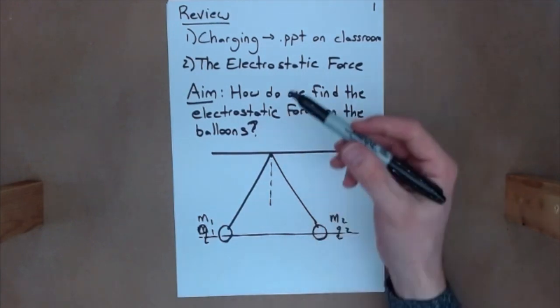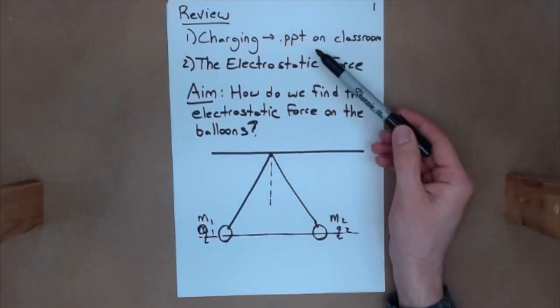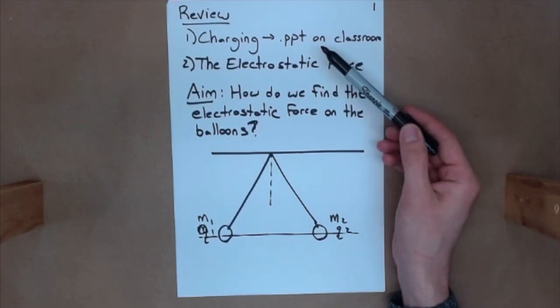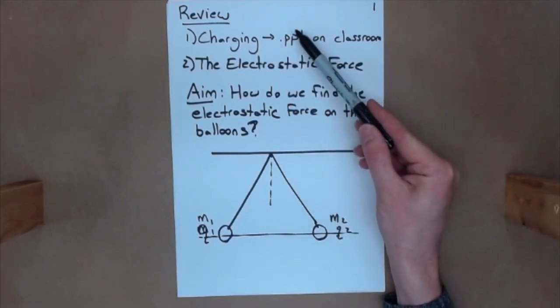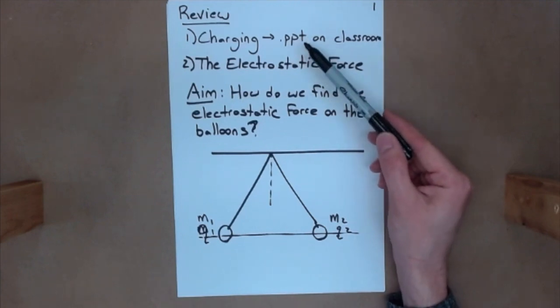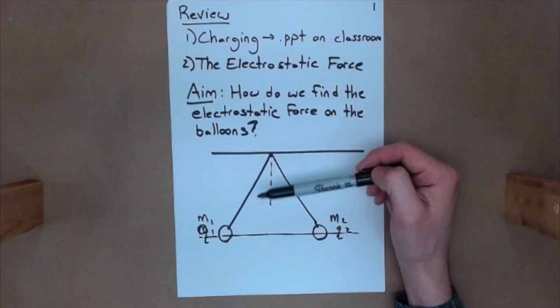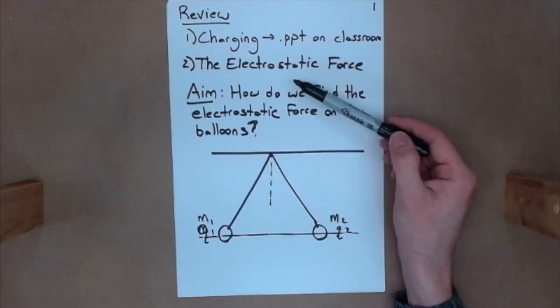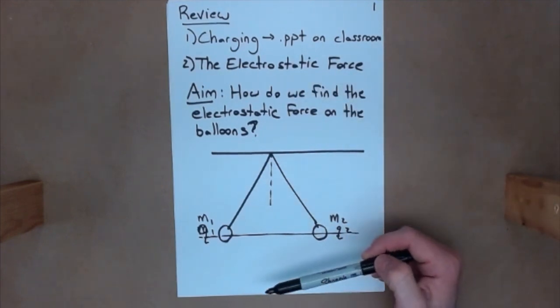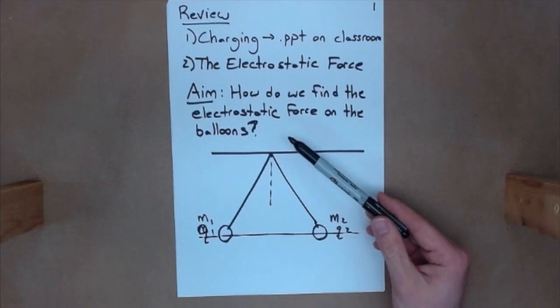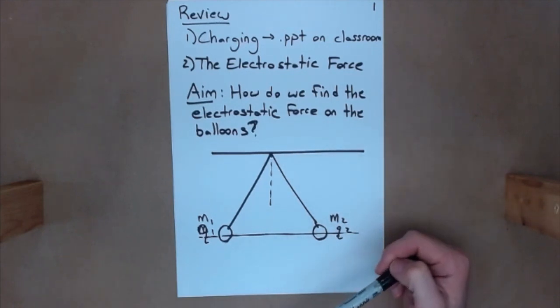So I want to start just by reviewing some things. First of all, we started in class with charging, and we just got charging quite a bit. For those of you who were uncertain, I posted those PowerPoints on Classroom, which have really nice visuals. I'll repost these, actually, along with this so you have access to it. Then we started talking about the electrostatic force, and we went into a little bit of detail with the equation, but we really didn't get much past that. So, based off of the demonstration, I want to talk about this aim here, which is how do we find the electrostatic force on the balloons?